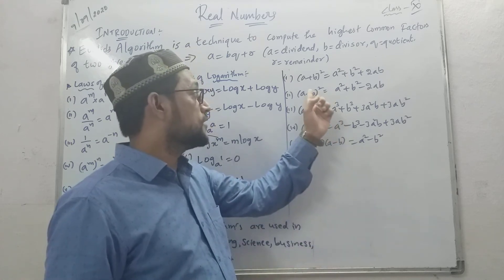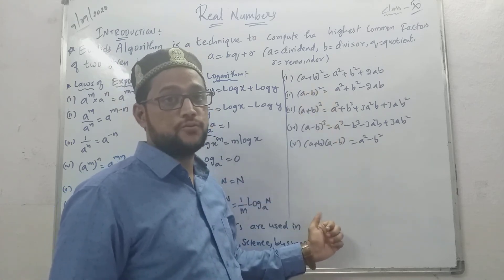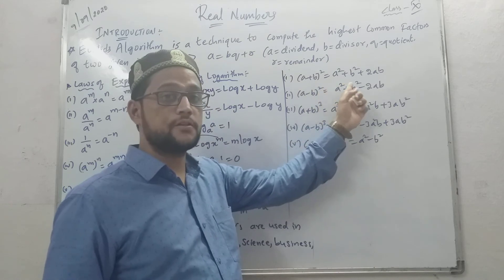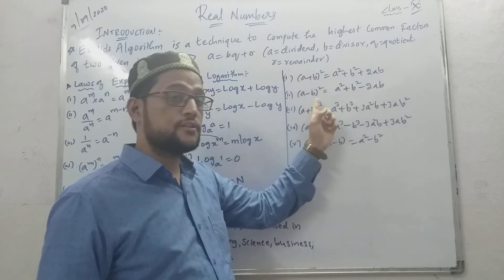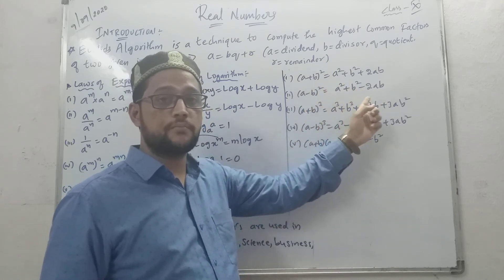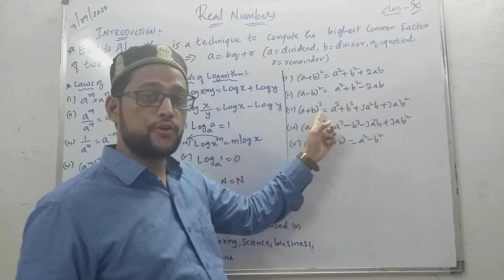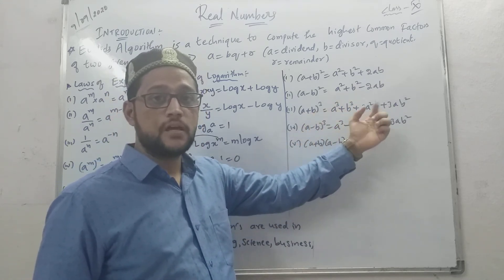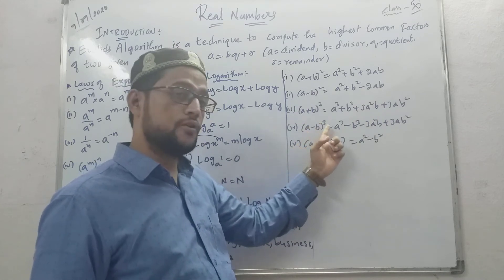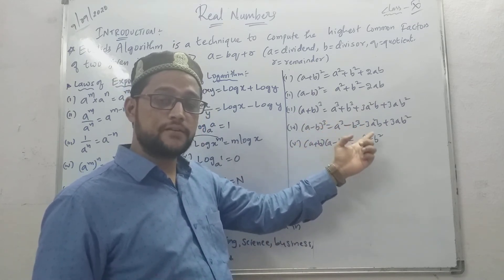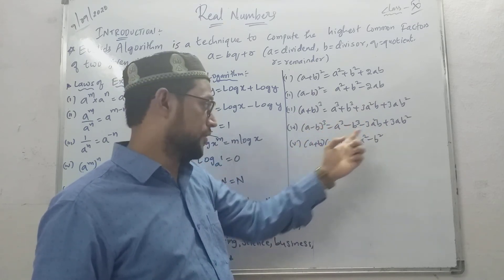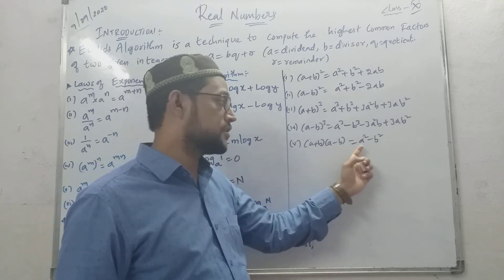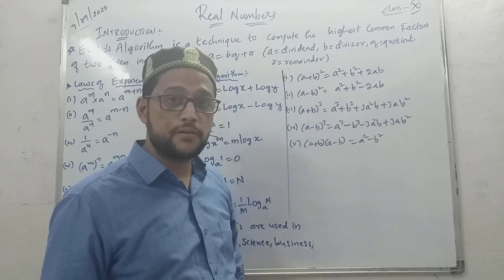After this, basic algebraic identities from previous classes that are also used in this chapter: A plus B whole square equals A square plus B square plus 2AB; A minus B whole square equals A square plus B square minus 2AB; A plus B whole cube equals A cube plus B cube plus 3A squared B plus 3AB squared; A minus B whole cube equals A cube minus B cube minus 3A squared B plus 3AB squared; A plus B into A minus B equals A square minus B square.